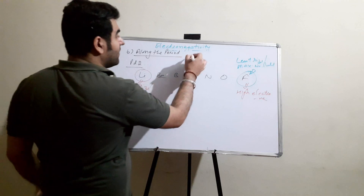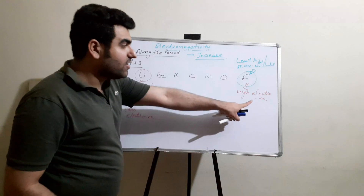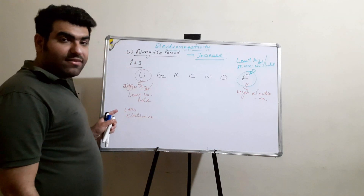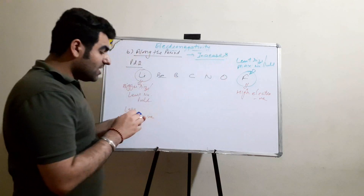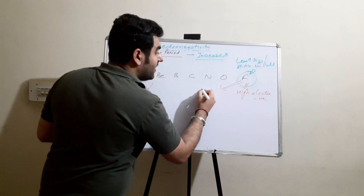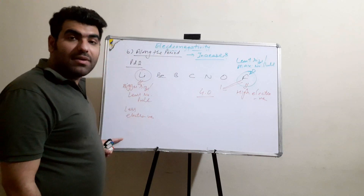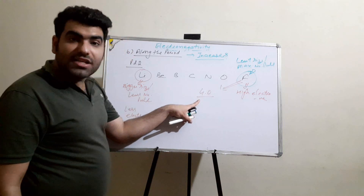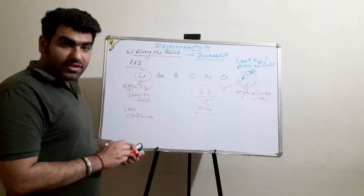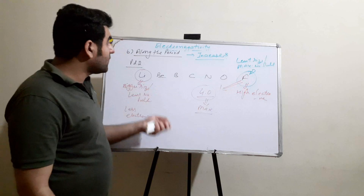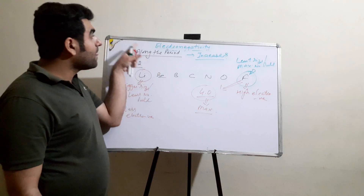So the trend of electronegativity along the period is that it increases. Fluorine on the right-hand side is highly electronegative; lithium on the left-hand side is less electronegative. Along the period, electronegativity increases. The value of electronegativity for fluorine is 4.0, which is the maximum value in the entire periodic table.